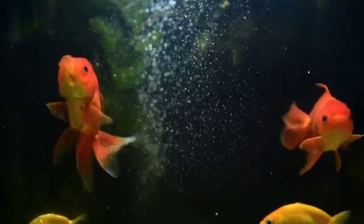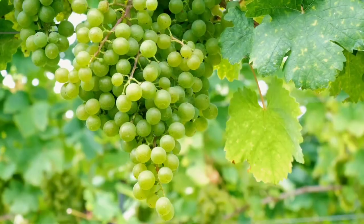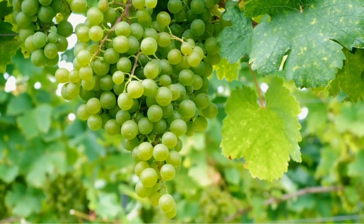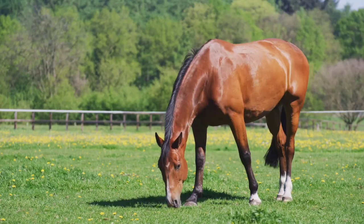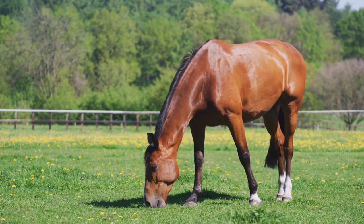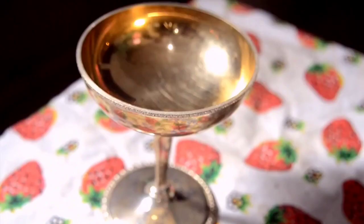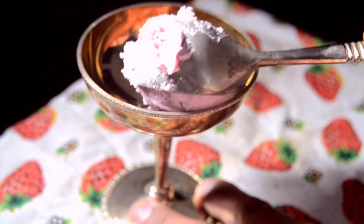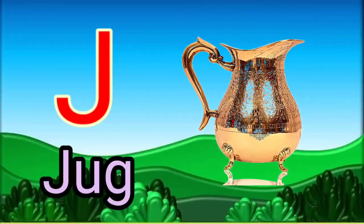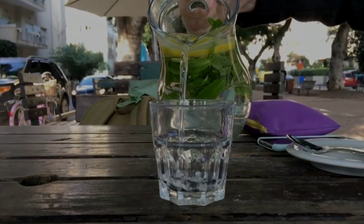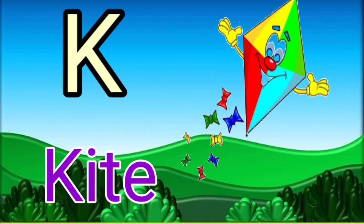G for grapes. H for horse. I for ice cream. J for jug. K for kite.